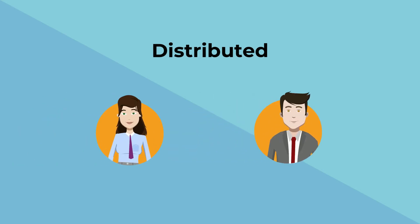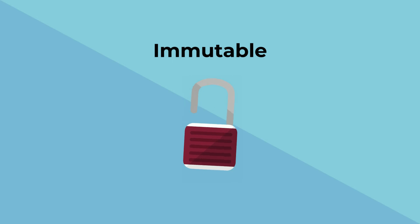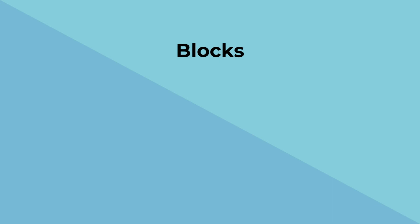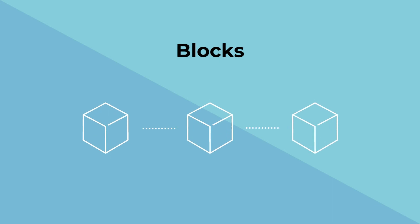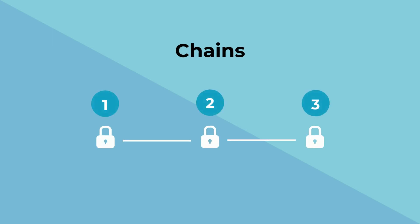Let's review what we've learned. Blockchain is distributed, meaning it is shared between parties. Blockchain is immutable, meaning it's irreversible and cannot be altered in any way. Blockchain consists of blocks, which are bundled records of transactions. Blockchain is encrypted, meaning each block has a unique secure code that makes it super safe. And blockchain chains the blocks together in chronological order.